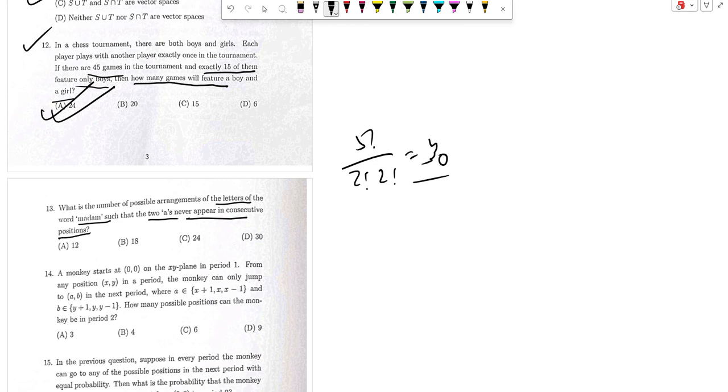So calculate the number of arrangements where two a's are together. Two a together, so this becomes 4 factorial divided by 2 factorial, 24 by 2, so that is 12.